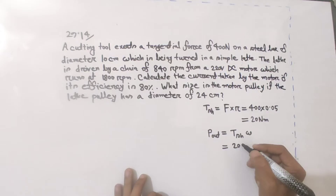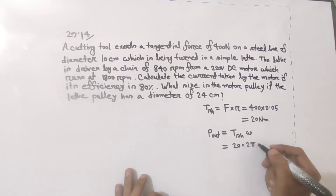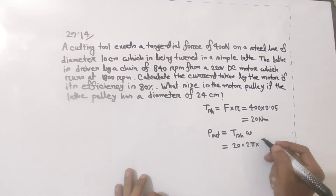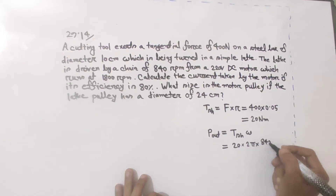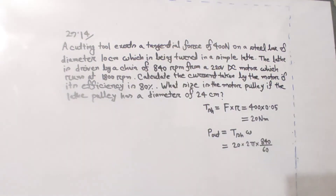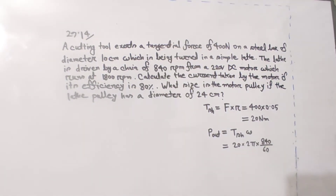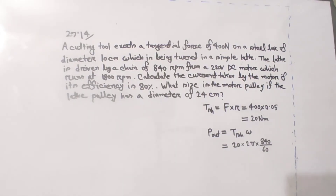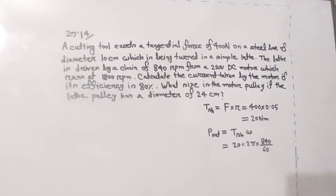Omega equals 2 pi into N divided by 60, where N is in rpm — revolution per minute — and dividing by 60 converts it to radians per second. So output power equals T into omega: 20 into 2 pi into N, divided by 60.